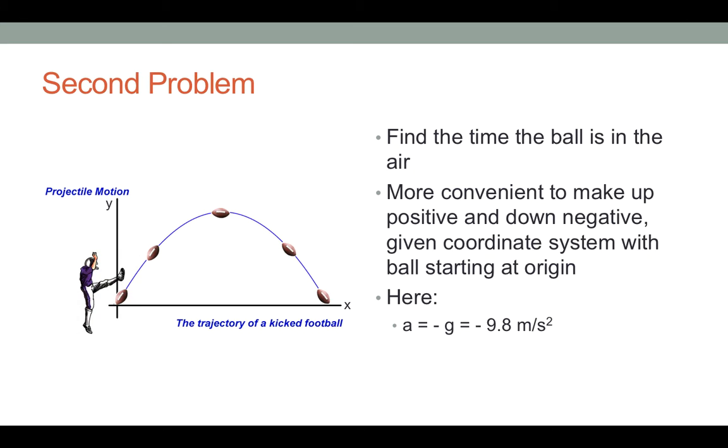Now let's look at a second problem. In this problem, we've got a guy kicking a football. The most convenient coordinate system is to put the football at the origin, make to the right positive, and make the y-axis vertically up, and make up positive.